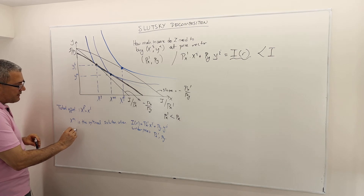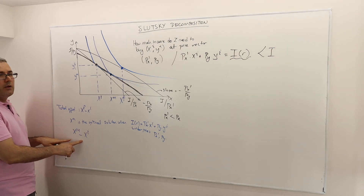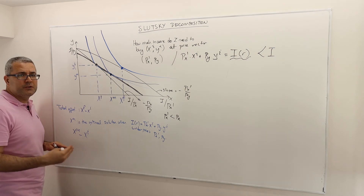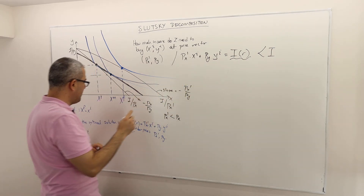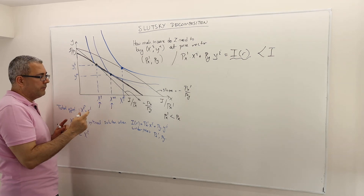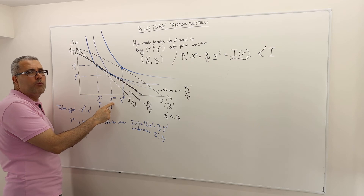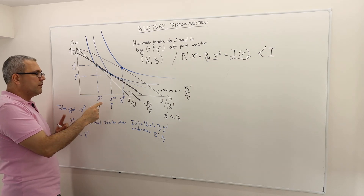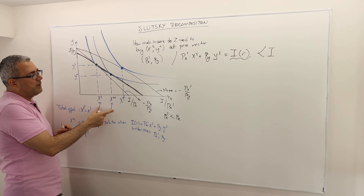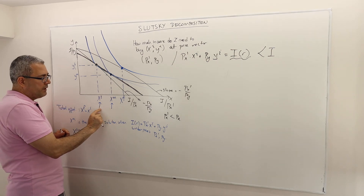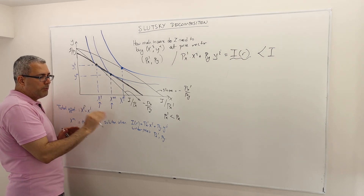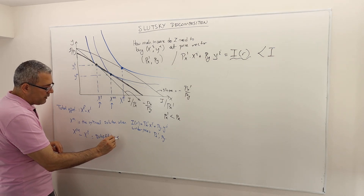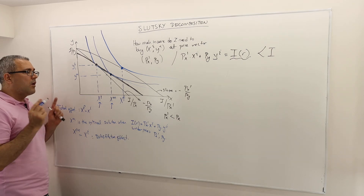If X_m minus X_i is non-zero — meaning I choose a different optimal point — that means I prefer to substitute. My purchasing power to buy the original bundle and the new bundle is the same, but I prefer the new point. That must be because the price of X is lower relative to Y. So jumping from X_i to X_m is purely due to the substitution effect.